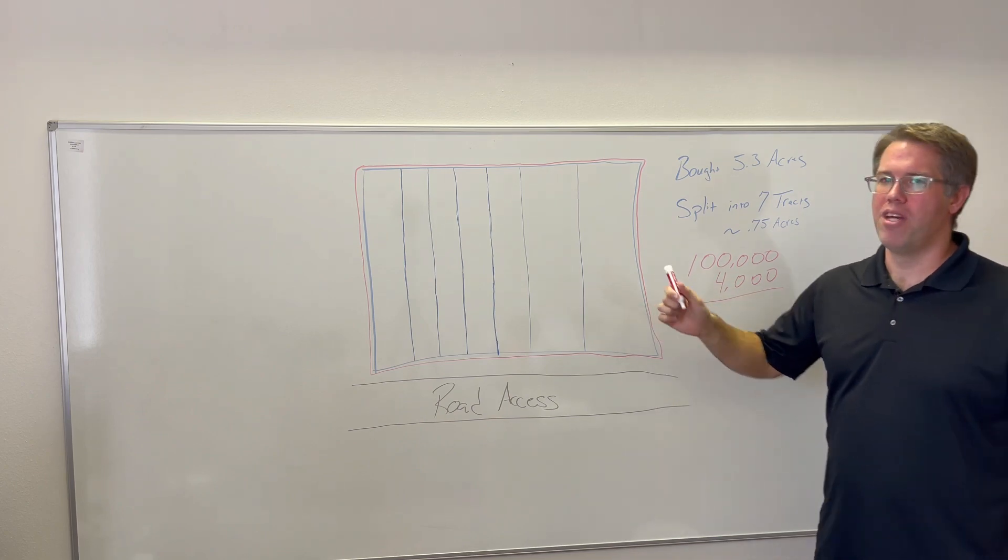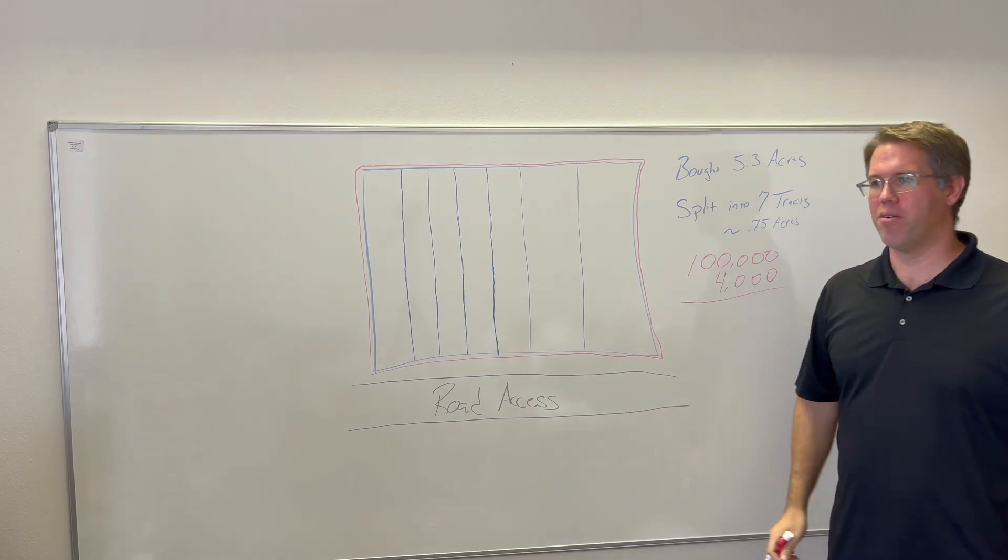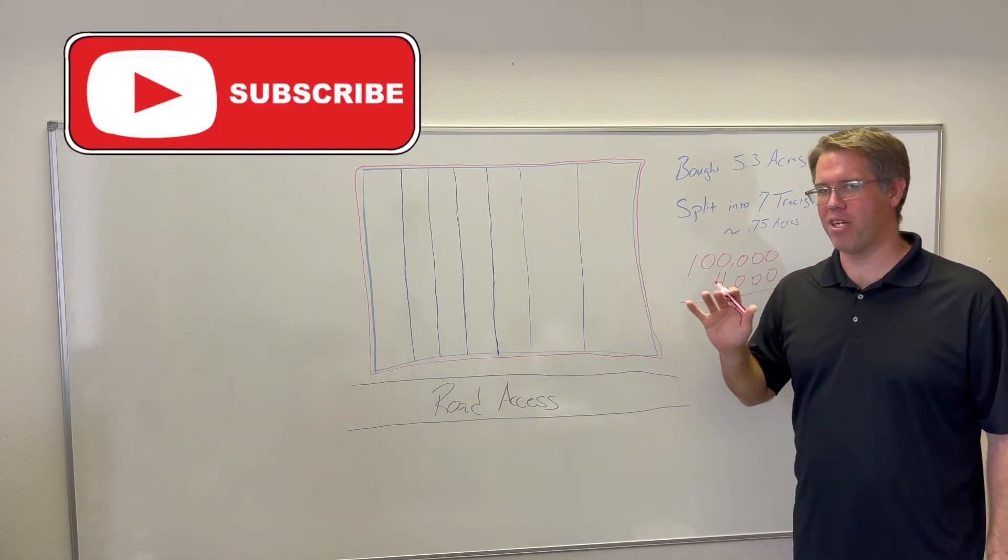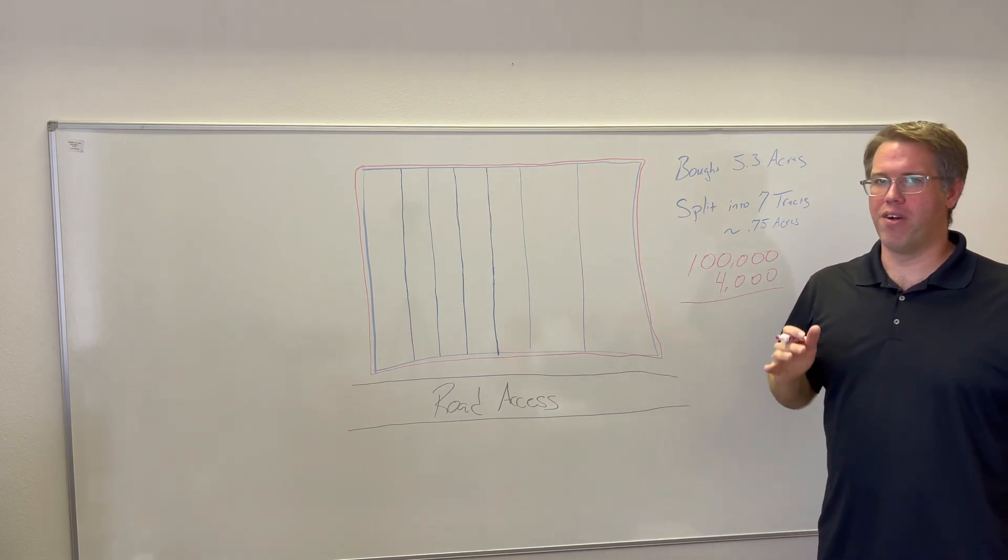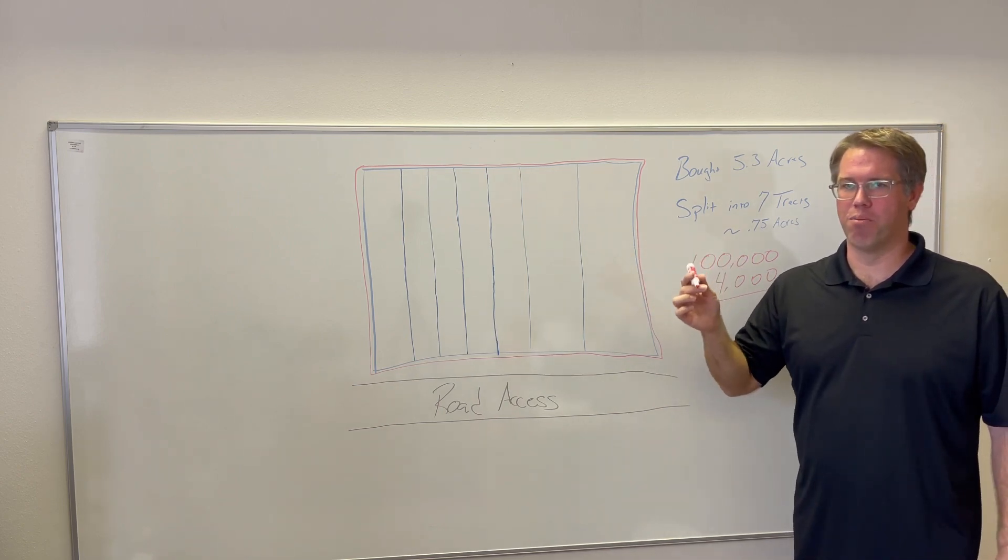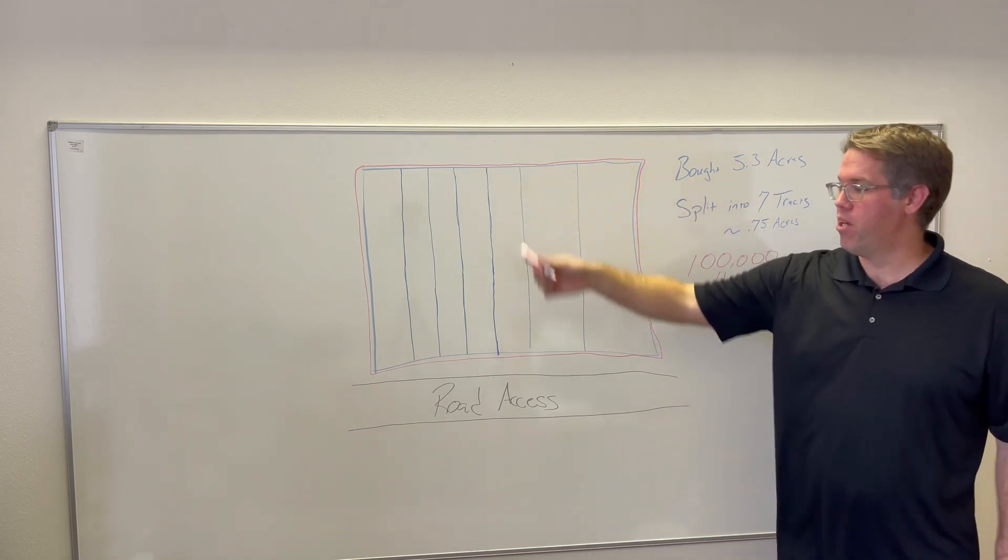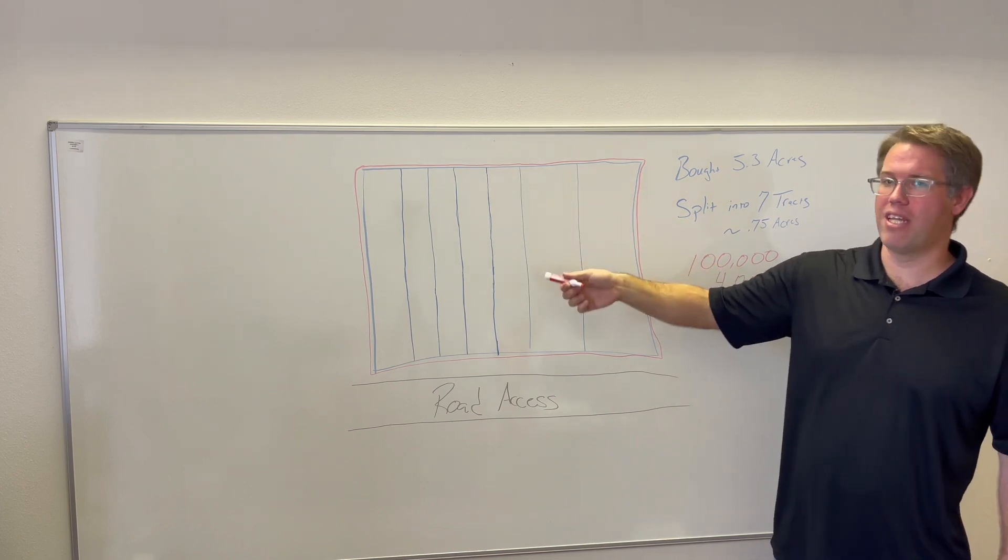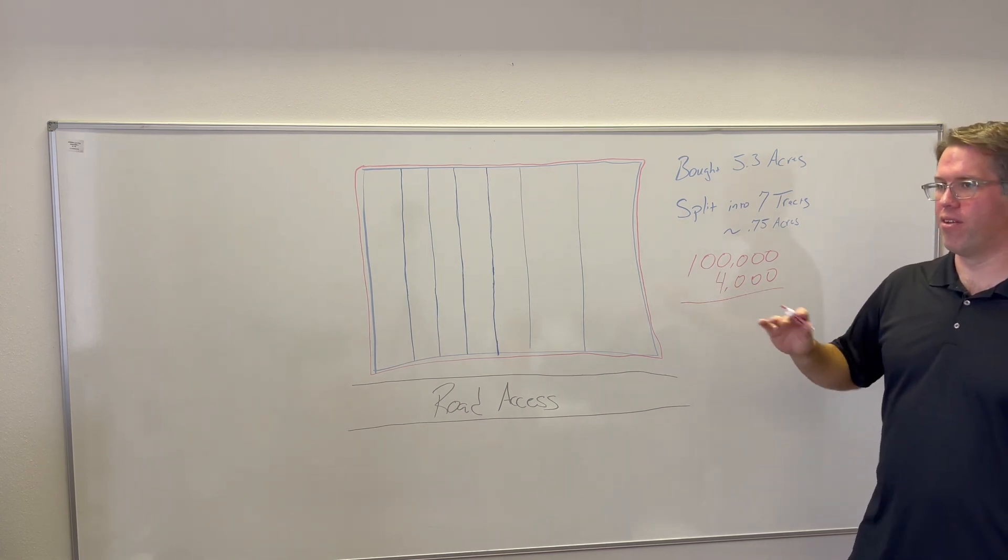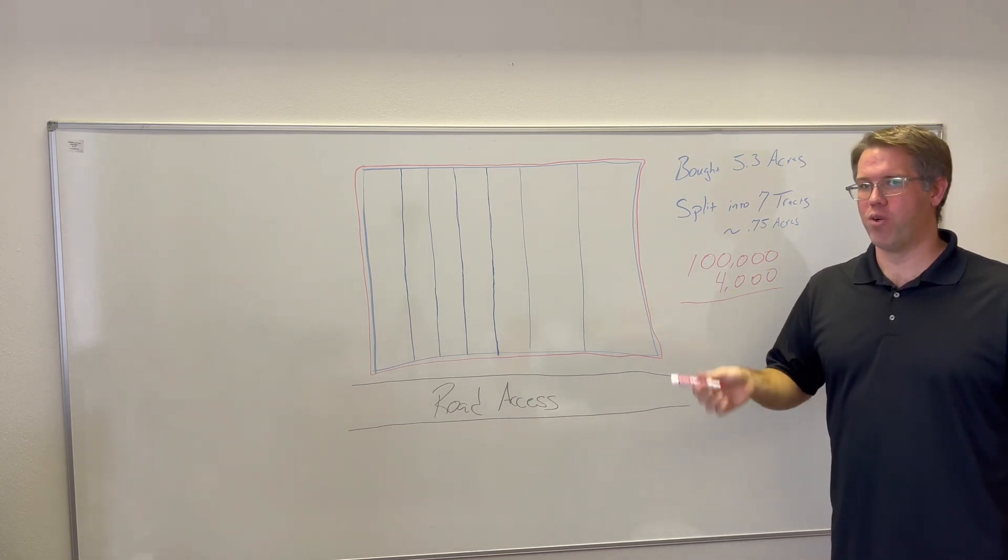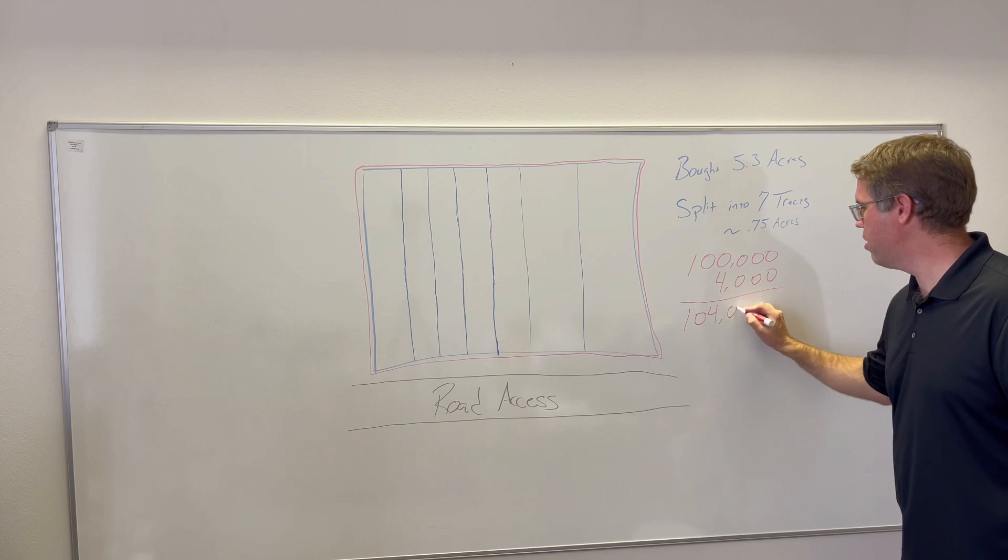That's all I spent. That's it. Simple one, one line item. If this was a house you're flipping, you'd have an Excel spreadsheet pegged out with so many expenses. And that was it to get it seven lots. There is other expense, like I cleared the land and made it look a little prettier, which was maybe another $4,000 after the fact. But to get it from the 5.3 acres to the seven separate tracts of land, that's what it took.